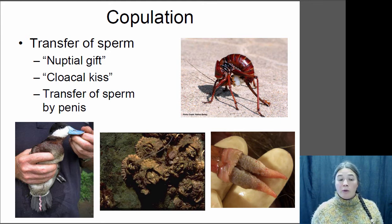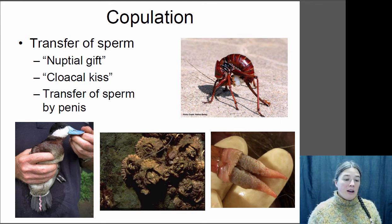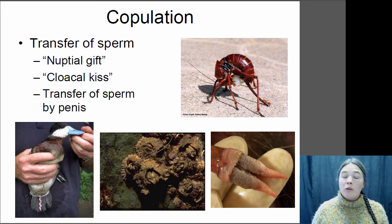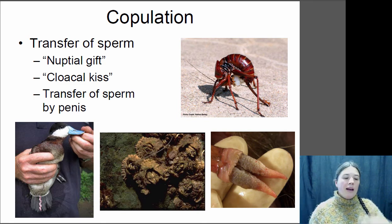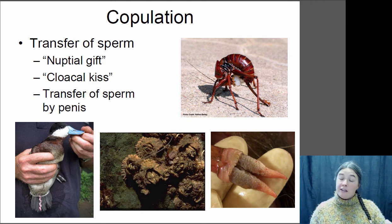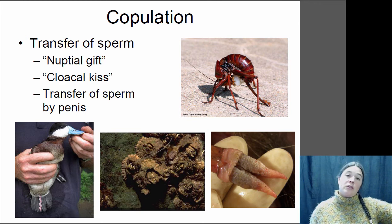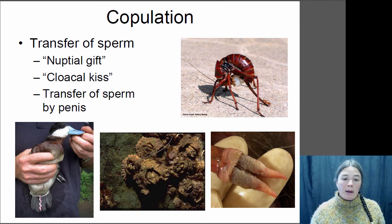Some birds do have a sperm transfer organ though. For example, this is a ruddy duck here, and the ruddy duck has a long corkscrew-shaped penis. Ducks live in the water and the cloacal kiss doesn't work so well in the water because the water will wash the sperm away. So they actually have a penis that they can evert from their cloaca when they need to reproduce and then retract when they don't — it's not visible most of the time.